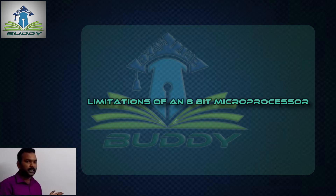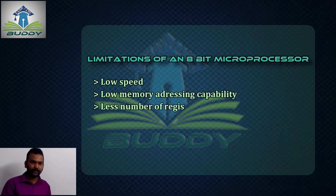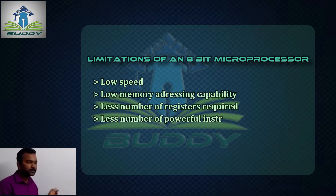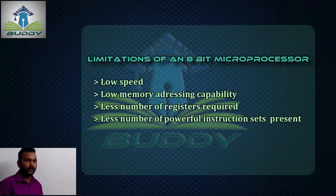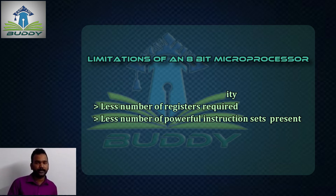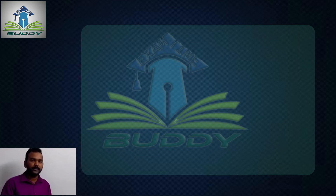We need to see what are the limitations of an 8-bit microprocessor. The following are the limitations: low speed, low memory addressing capability, less number of registers, and less number of powerful instructions in the instruction set. These limitations led to the launching of the advanced microprocessor.